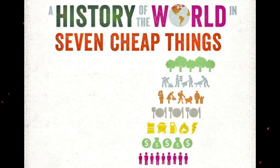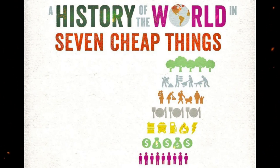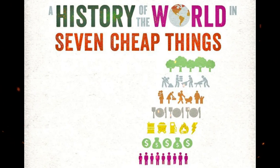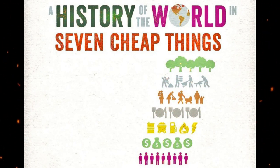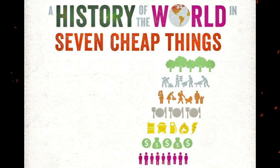The cheap things of the title are nature, money, work, care, food, energy, and lives. In practice, Patel and Moore argue these seven categories are mutually interdependent, with the cheapness of each making possible the cheapness of the others.